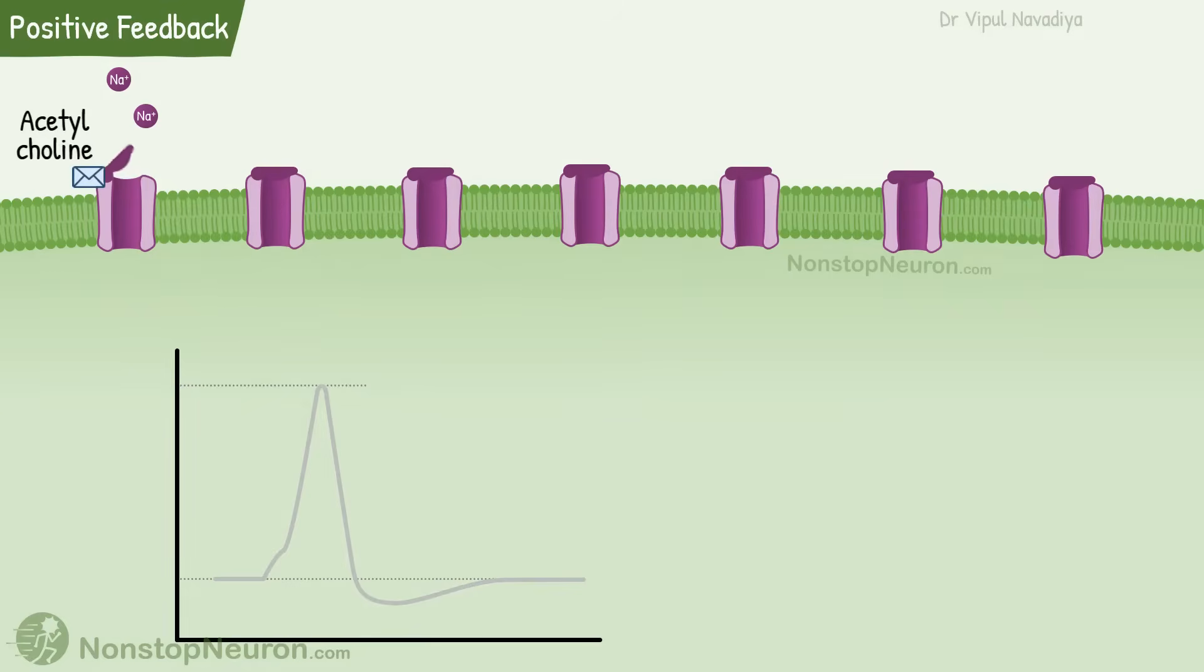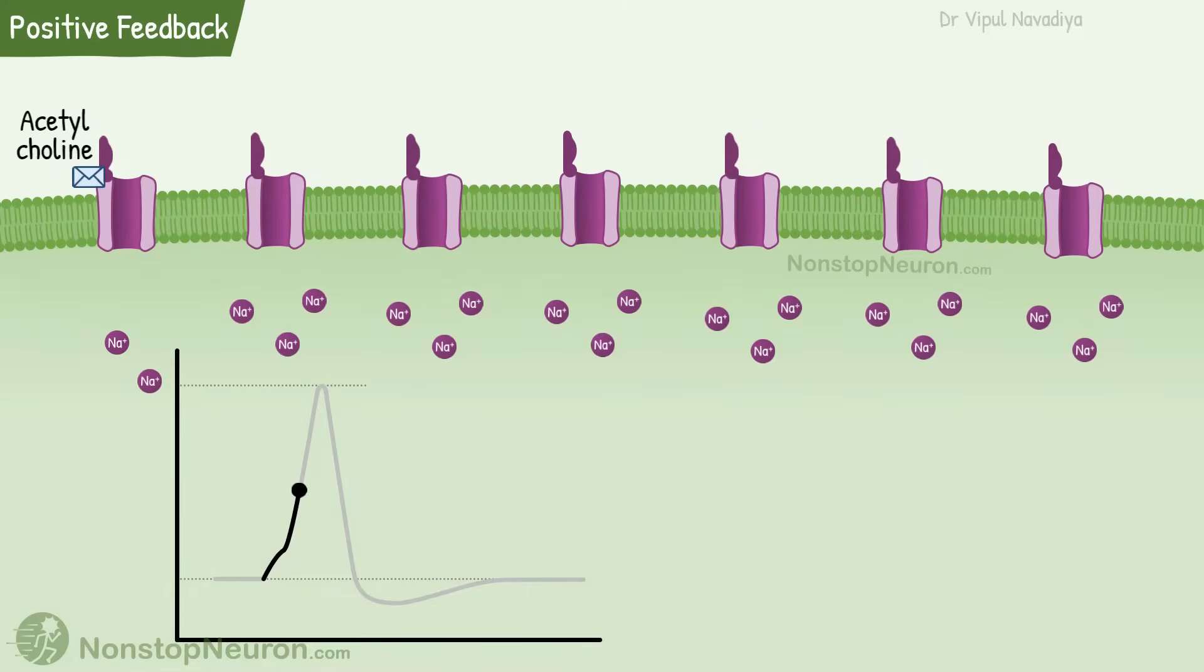Sodium entry during depolarization is an example of positive feedback loop. See, the stimulus causes entry of sodium into the cell. This initial entry is small. However, it changes the membrane potential that opens some voltage-gated channels. So, more sodium enters through these channels. That sodium further intensifies the voltage changes that causes opening of even more sodium channels.